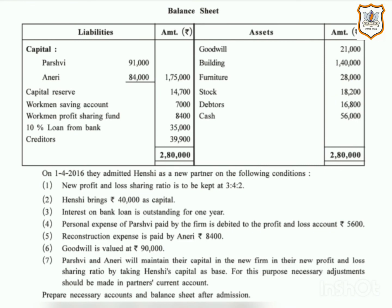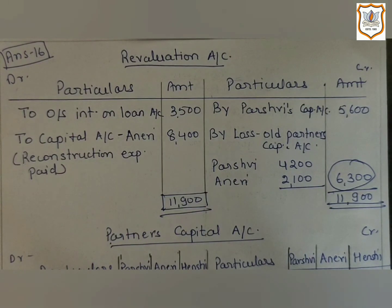Hello dear students, today we are going to do question number 16 of your textbook on page number 213. There are two partners, Parswee and Aniri, and they share profit and loss in the ratio of 2:1. The balance sheet of their firm as on 31st March 2016 is given. On 1st April 2016, they admitted Hansi as a new partner with some conditions. We have to prepare necessary accounts and balance sheet after admission.